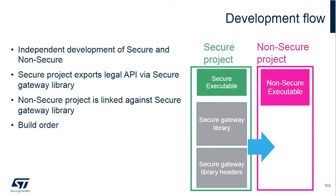Here are two slides on the flow of developing secure and non-secure applications. Each application is generated independently of the other. The secure project exports an NCS lib file, which is the gateway — the NSC callable — from the secure to the non-secure. The non-secure is linked against that secure gateway library. Build order is very important: build the secure project first, then build the non-secure project.